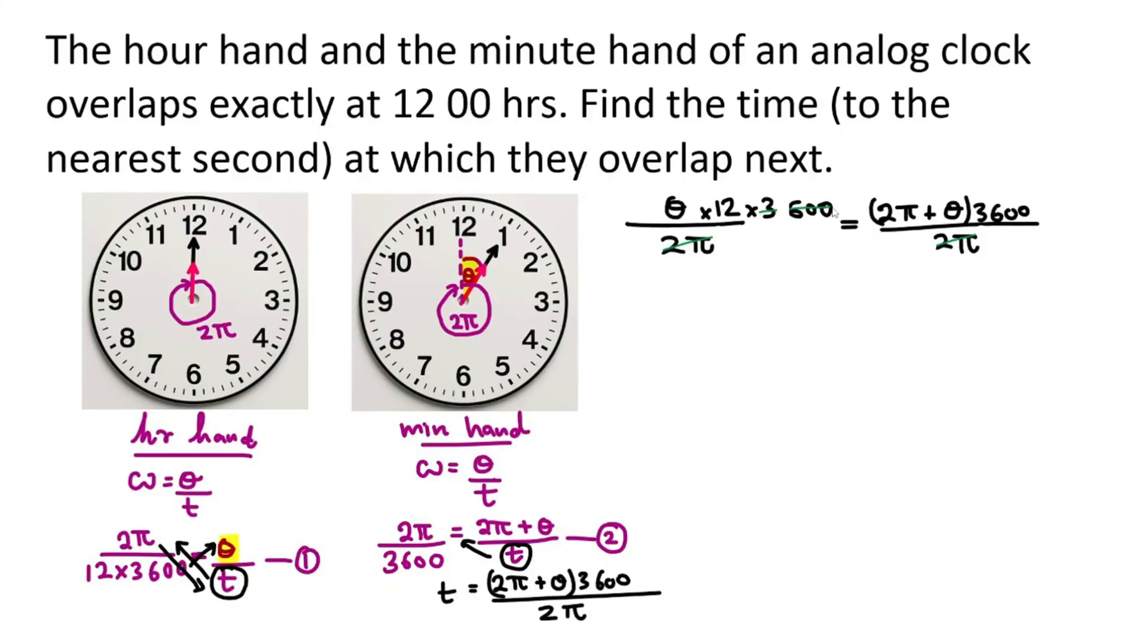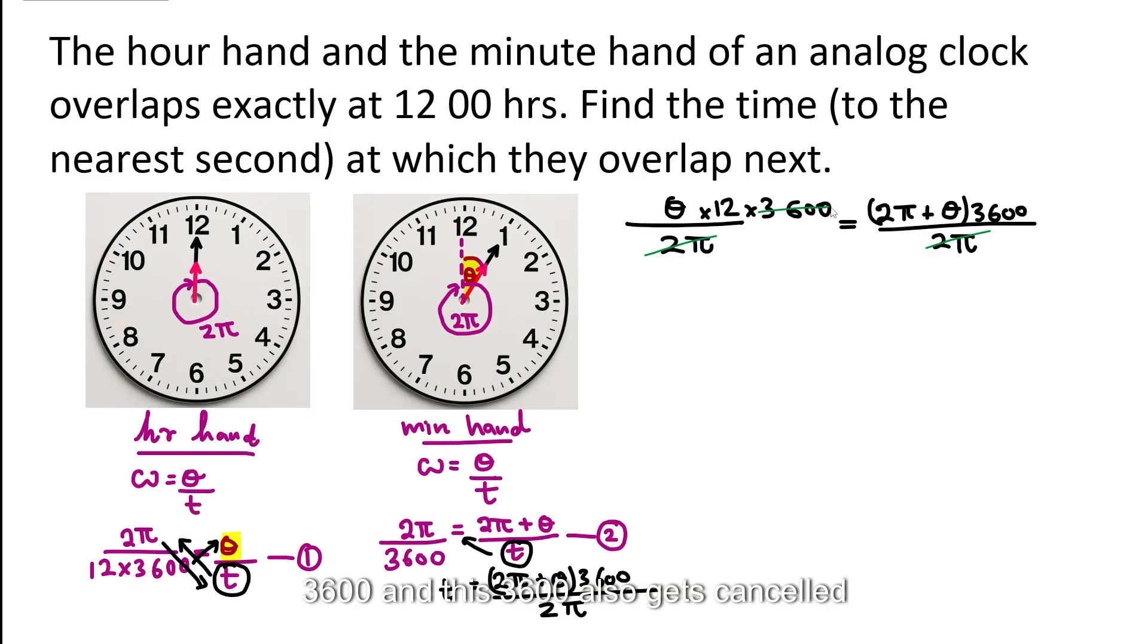Now, this is very easy to simplify because I can see this 2 pi and 2 pi gets cancelled out. 3,600 and this 3,600 also gets cancelled out. So I get 12 theta is equal to theta plus 2 pi, move the theta to this side, 11 theta is equal to 2 pi. So I know theta is 2 pi over 11, and this is in radians.